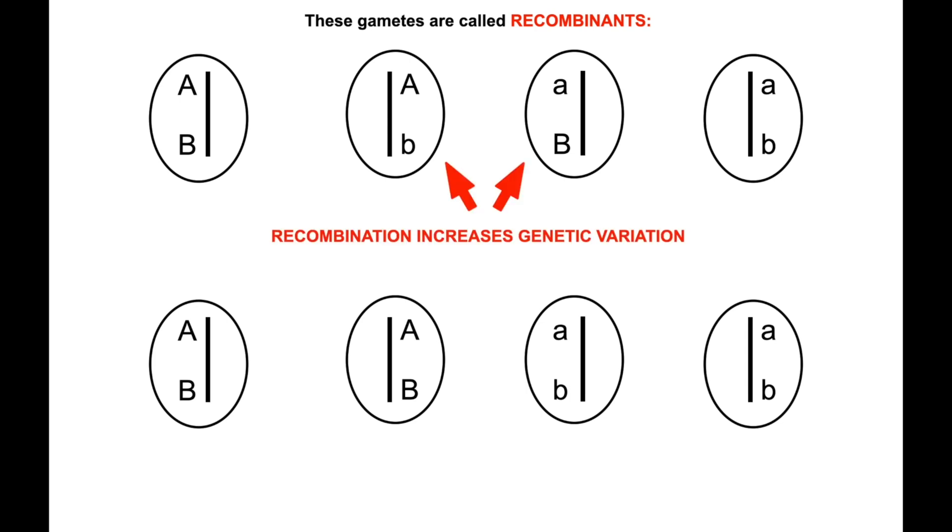The two in the middle, the recombinants, these are the ones that have increased our genetic variation so that we have four different types of gametes as a result of recombination as opposed to the two different types at the bottom when there was no recombination.